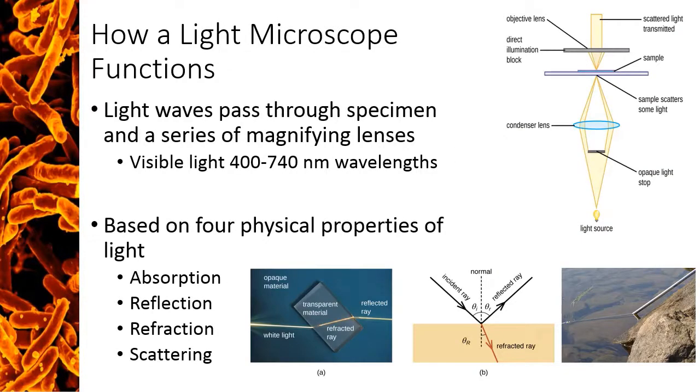Light microscopes work because of the physical properties of light. Remember that light is a form of kinetic energy. It is physically moving through space, traveling as light waves. Different types of colors of light have different wavelengths as measured from the top of one wave to the next. So as you look at a wavelength of light, the measurement from here to here will tell you what that wavelength is. Shorter wavelengths of light would look like this where the waves are closer together.